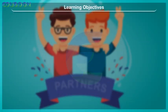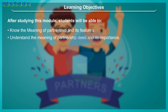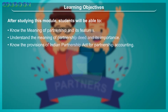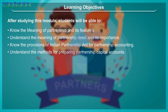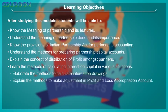Learning Objectives. After studying this module, students will be able to: know the meaning of partnership and its features; understand the meaning of partnership deed and its importance; know the provisions of Indian Partnership Act for partnership accounting; understand the methods for preparing partnership capital accounts; explain the concept of distribution of profit amongst partners; learn the methods of calculating interest on capital in various situations; and elaborate the methods to calculate interest on drawings and make adjustments in profit and loss appropriation account.